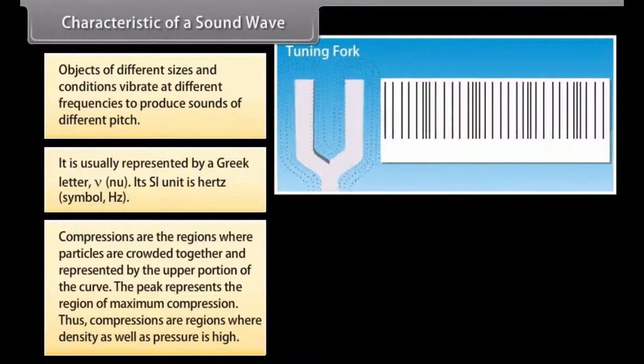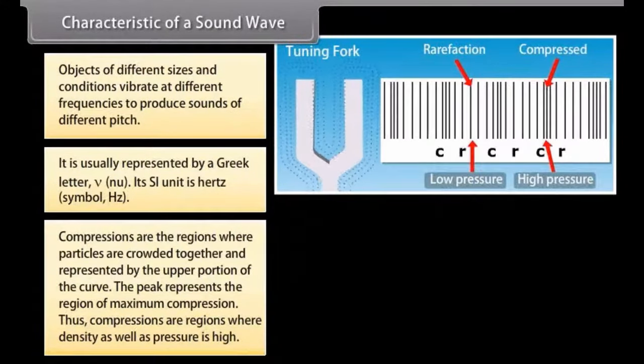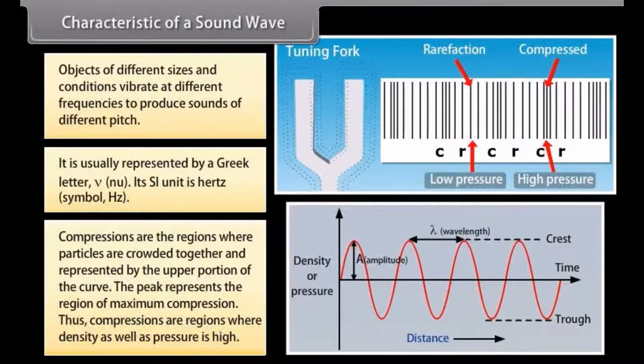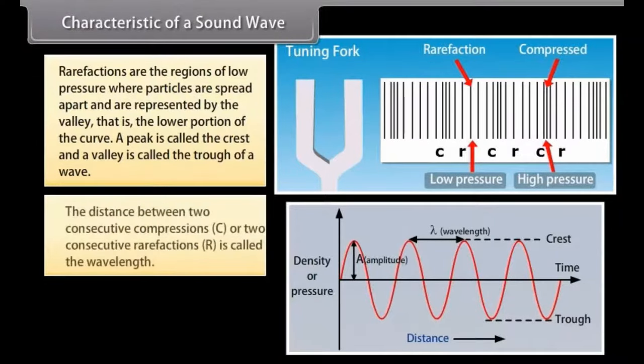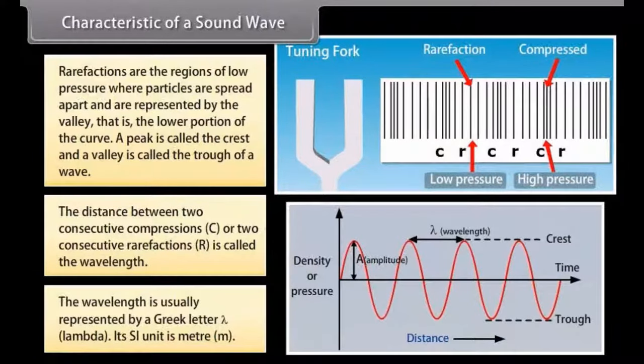We know that compressions are the regions where particles are crowded together and represented by the upper portion of the curve. The peak represents the region of maximum compression. Thus, compressions are regions where density as well as pressure is high. Rarefactions are the regions of low pressure where particles are spread apart and are represented by the valley, that is, the lower portion of the curve. A peak is called the crest and a valley is called the trough of a wave. The distance between two consecutive compressions or two consecutive rarefactions is called the wavelength. The wavelength is usually represented by a Greek letter, lambda. Its SI unit is meter, m.